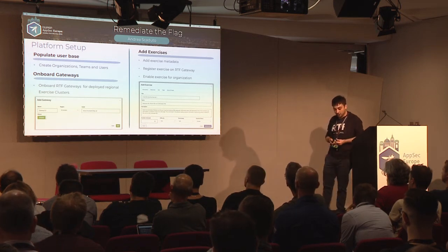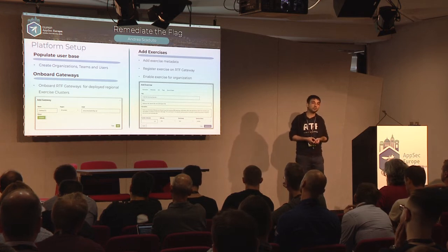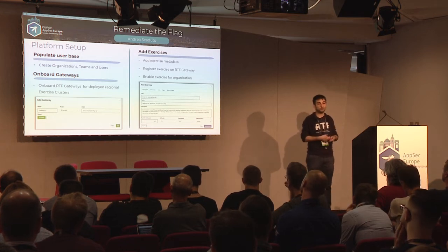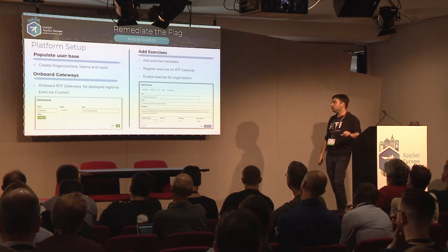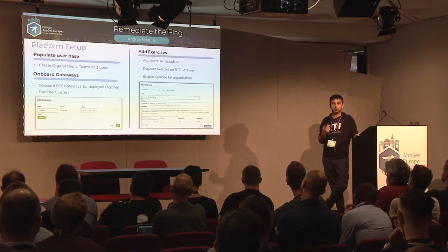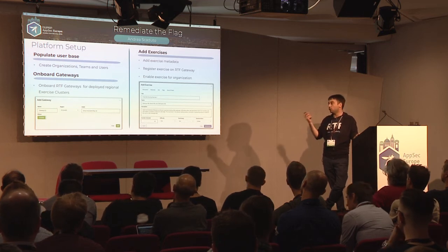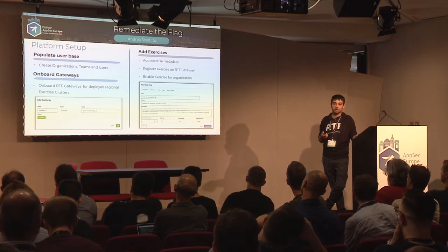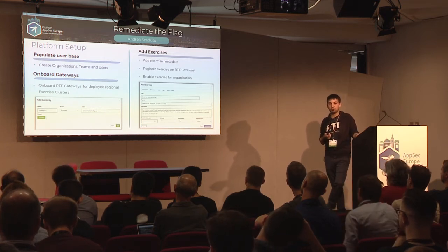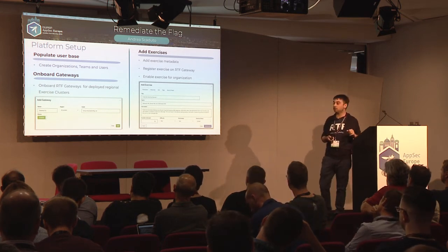After deployment, first populate the user base by creating organizations, teams, and users to mirror your internal organization structure. Then onboard the gateways you deployed — with the main deployment you get one gateway, but you can deploy more. To onboard a gateway, you select the name, the AWS region where it was deployed, and the FQDN — that's it.